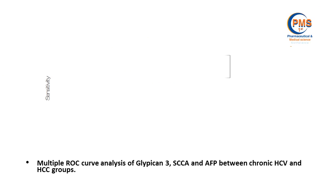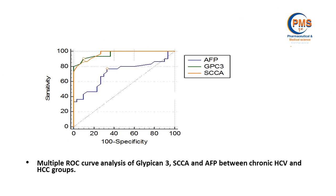Squamous cell carcinoma antigen had sensitivity of 86.7% and specificity of 90%. Glypican-3 had sensitivity of 90% and specificity of 90%. Alpha-fetoprotein had sensitivity of 76.7% and specificity of 66.7%.